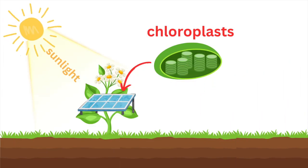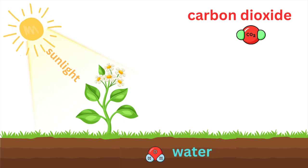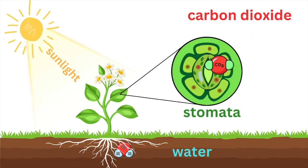But sunlight isn't enough. Plants also need two more ingredients: carbon dioxide from the air and water from the soil. Plants take in carbon dioxide through tiny openings in their leaves called stomata. The roots absorb water from the ground and send it up to the leaves.